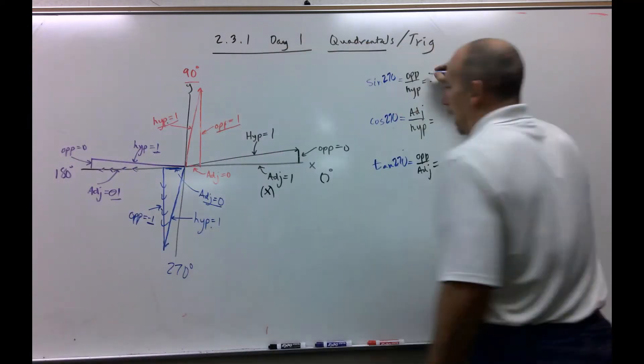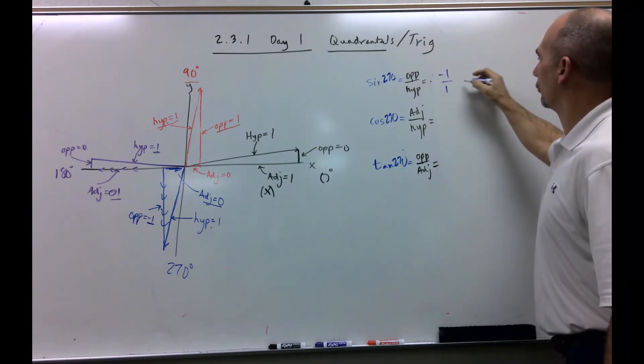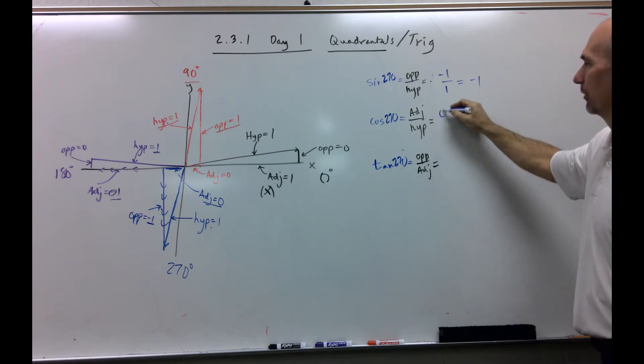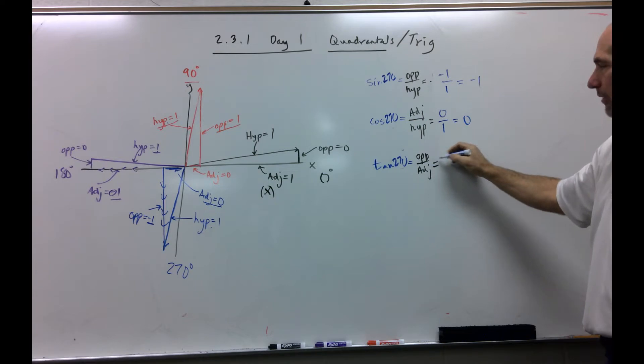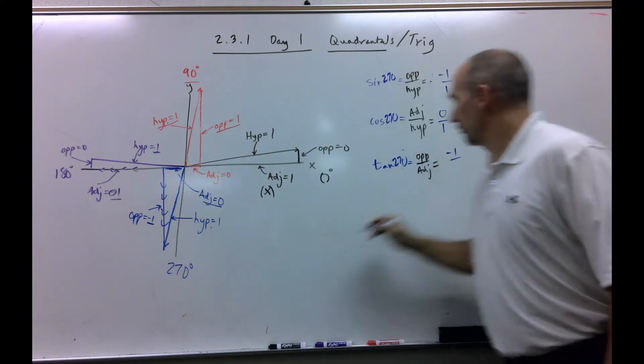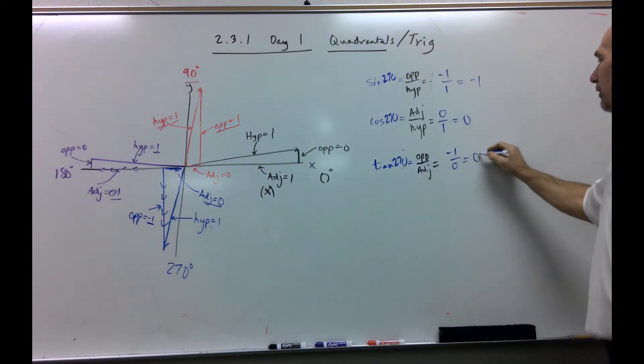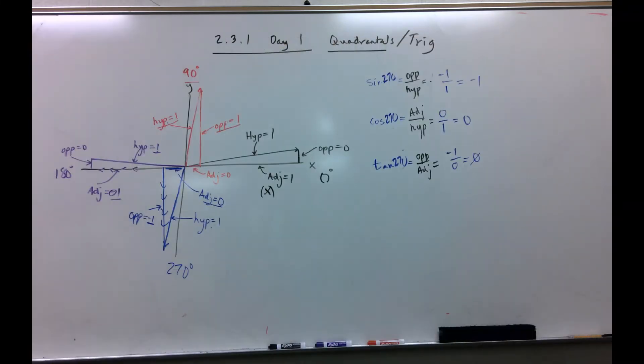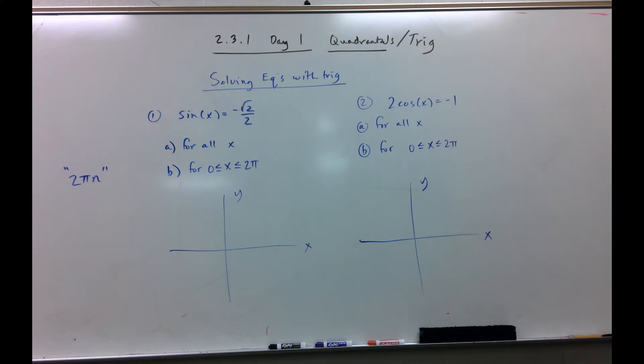So, my opposite side here is negative 1. My hypotenuse is 1, negative 1. Cosine of 270. Adjacent side disappears. My hypotenuse is 1, 0. Tangent of 270. My opposite side is negative 1. My adjacent side disappears again. That is undefined. 0 degrees is the same thing as 360. So, keep that in mind. And, again, don't forget to test these out with your calculator.